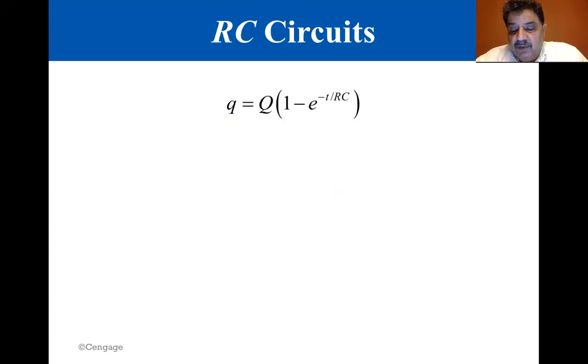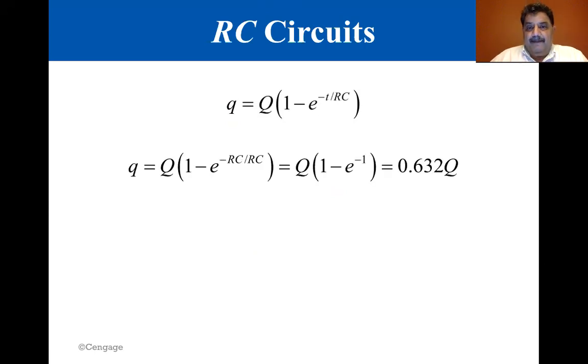Let's see how this works by substituting t equals tau into our equation. Note that the capacitor charges very slowly in a circuit with a long time constant and very rapidly in a circuit with a short time constant. After a time equal to 10 time constants, the capacitor is more than 99.99% charged.